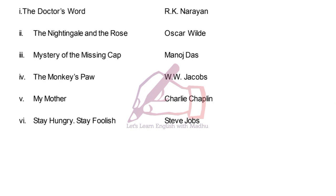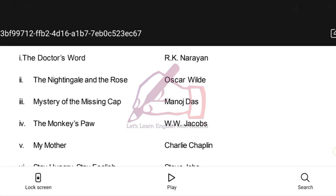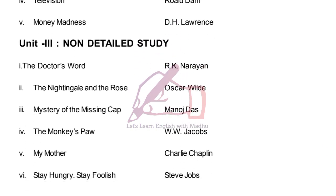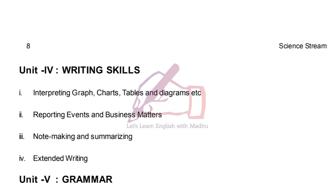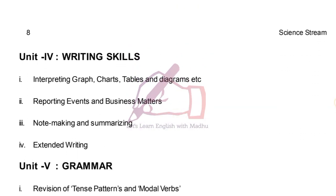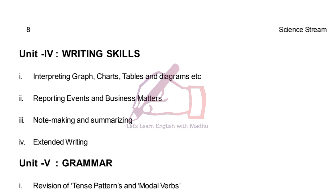We will discuss the syllabus. So: Prose, Poetry, Story section — then you have a writing skill which is very very important for you all, that is interpreting graph, chart, table and diagram.